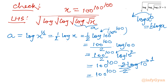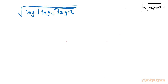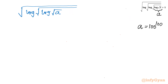Now I have to put A over here. So I will write: square root log, square root log, square root A, and A is 100^100. As log root x was A, so we have to calculate square root log, square root log, square root A. And we have calculated A equals 100^100.